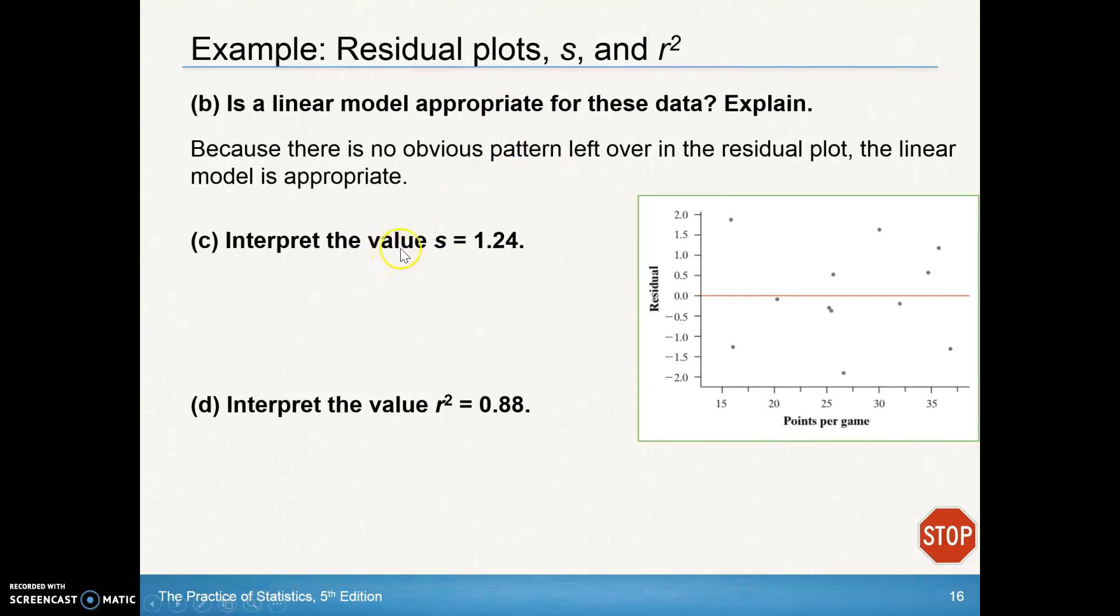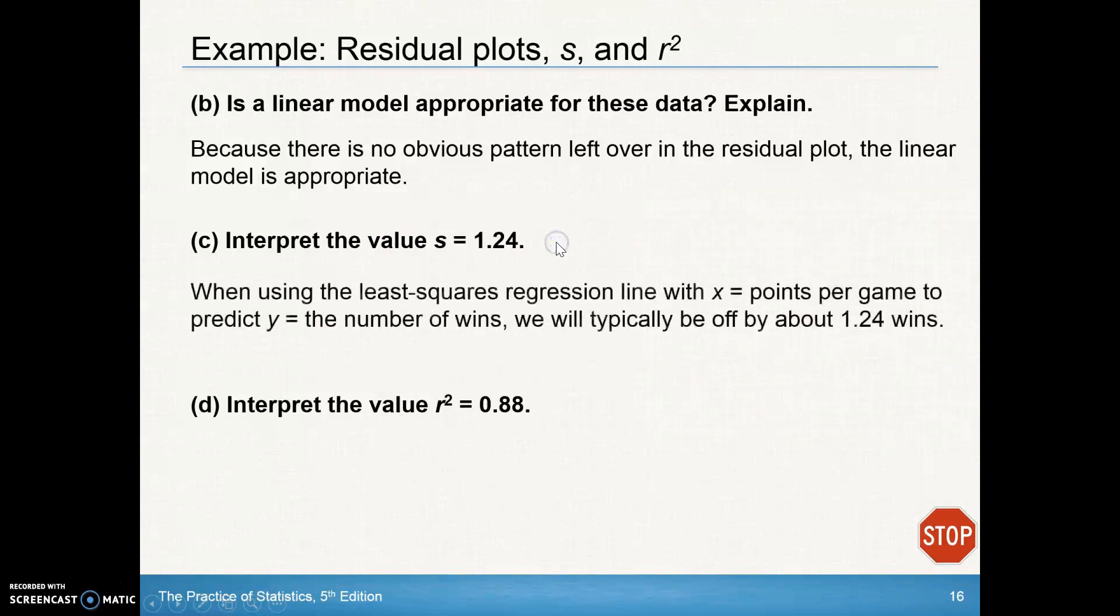If we're going to interpret the value of s, remember now s is that typical distance from the regression line, or that average distance from the regression line. When using the least squared regression line, with x equaling the points per game to predict y equals the number of wins, we'll typically be off by about 1.24 wins.